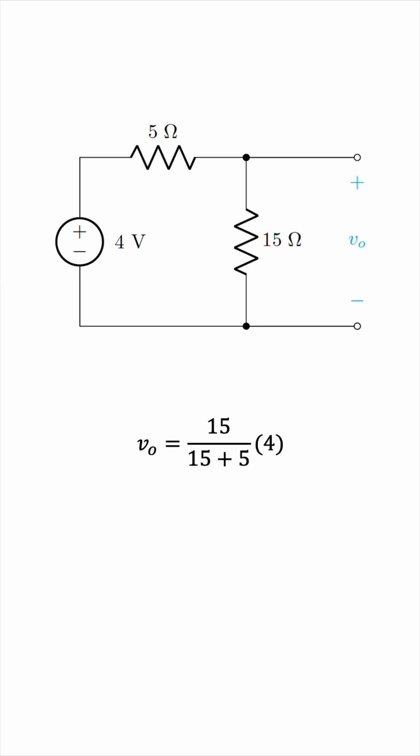V0 will be 15 over the sum of 15 and 5, and then times the voltage source, which is 4 volts. And this works out to be 3 volts.